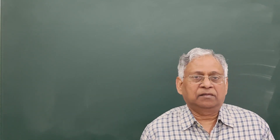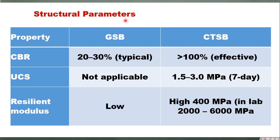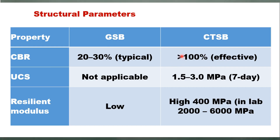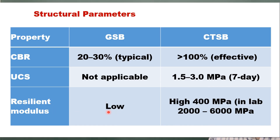For structural parameters, in the case of GSB we consider the CBR value. MoRT&H specifications suggest that CBR of the GSB layer should be 20 to 30 percent. For CTSB, because it is a semi-rigid material, CBR can be more than 100 percent, so CBR is not a relevant criterion. For CTSB, UCS is the design criterion, and IRC recommends that the 7-day UCS of CTSB material should be 1.5 to 3 MPa. Resilient modulus is low for GSB due to no cohesion between aggregates, and high for CTSB.